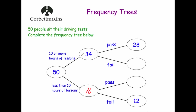Going to the group of 34 people who sat 10 or more hours of driving lessons: 28 of them passed the driving test. That means the rest failed — 34 take away 28 gives us 6 — so 6 people failed the driving test having taken 10 or more hours of lessons.